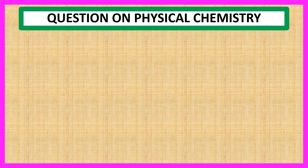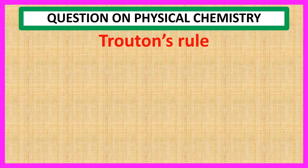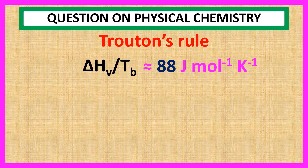We know that Trouton's rule is expressed as ΔHv / Tb ≈ 88 J·mol⁻¹·K⁻¹, where ΔHv is the heat of vaporization and Tb is the boiling point.